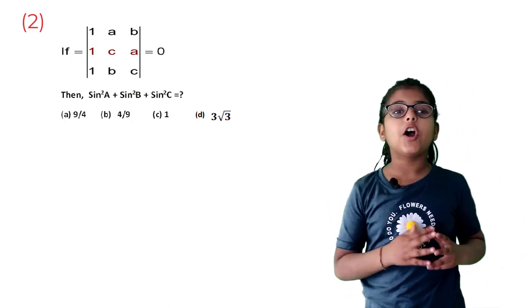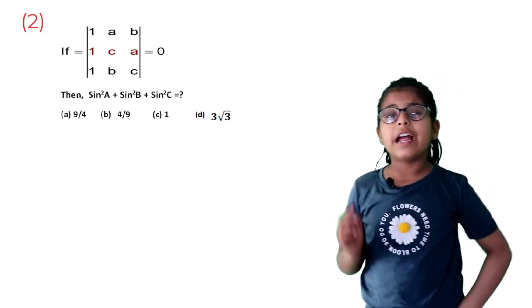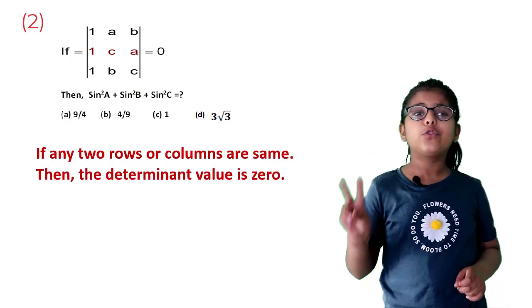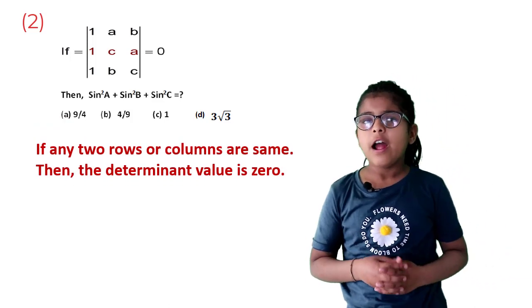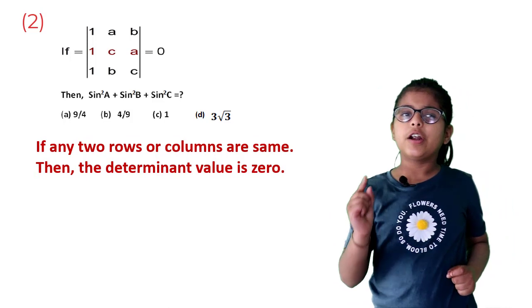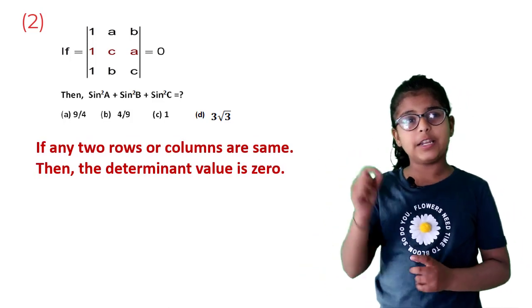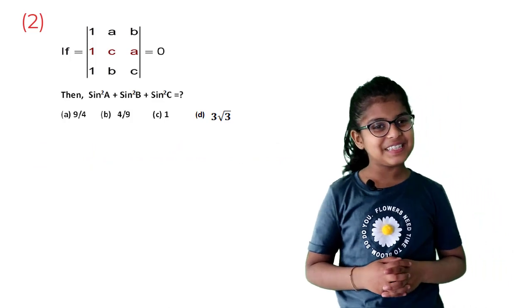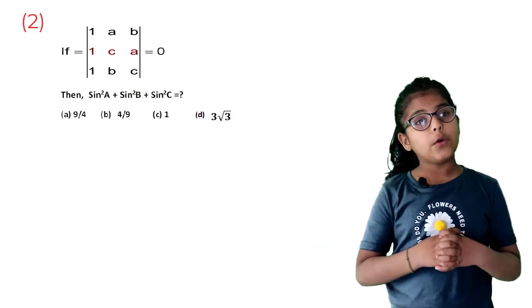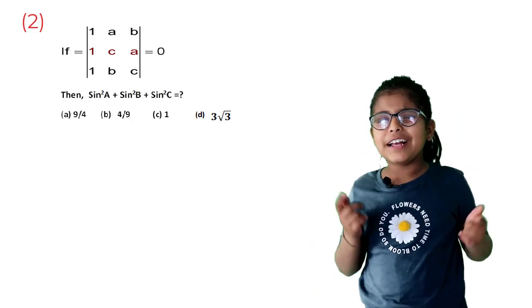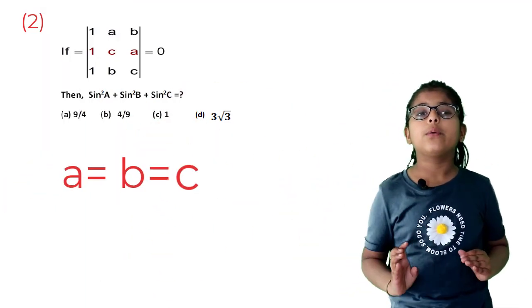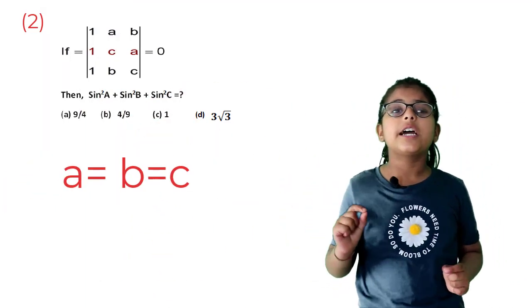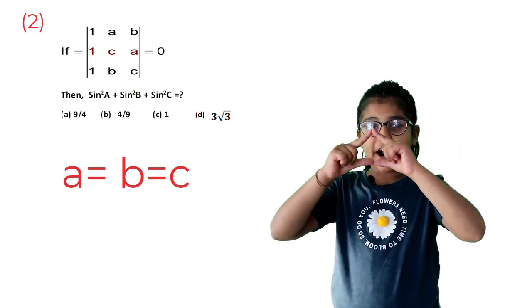Here I will use the property of determinant. That is, if any two rows or columns are same, then the determinant value is 0. So in this question, determinant equals 0, which means two columns must be same. Hence, A equals B equals C. This is the case of an equilateral triangle.